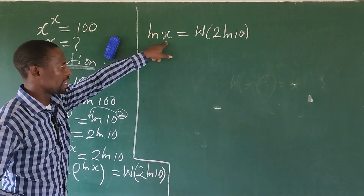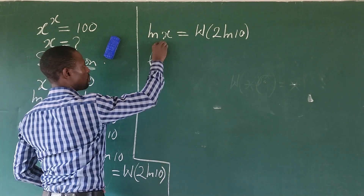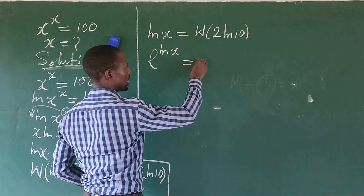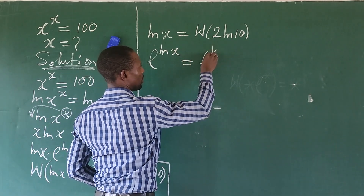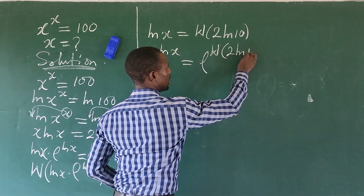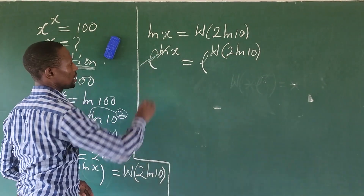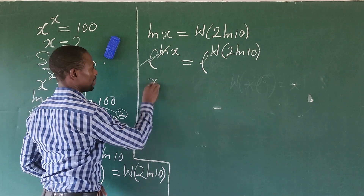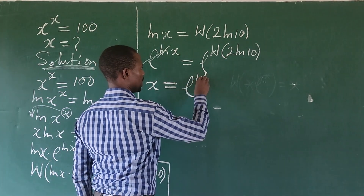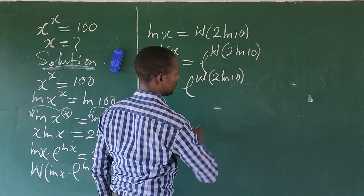From here, we are looking for x and we have a natural log. All we need to do is rewrite: this becomes e to the power of LN of x. We do the same on the other side — e to the power of LN of x, and the LN and e cancel. So we are left with x equal to e to the power of the Lambert W function of 2 LN of 10.